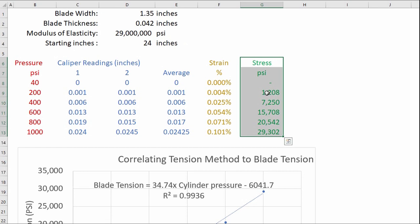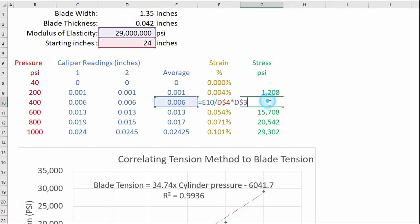So here this is simply going to be the strain times the modulus of elasticity so let me double click on one of these here and you can see the formula E10 which is this value right here divided by the starting inches so that's going to give you your strain times D3 which is your modulus of elasticity and that's going to give you your psi.